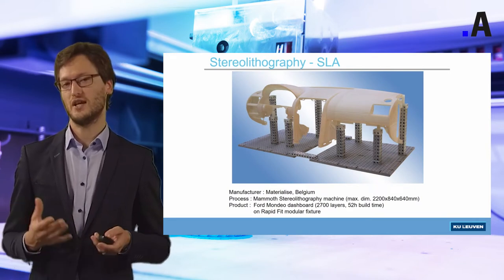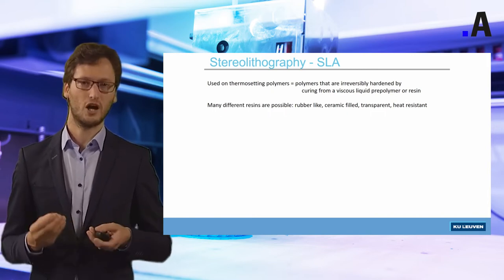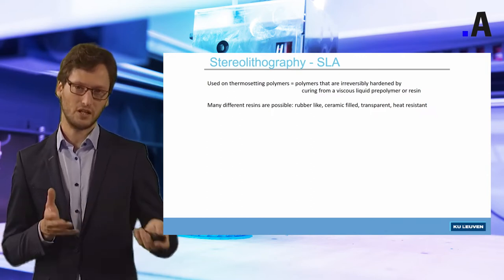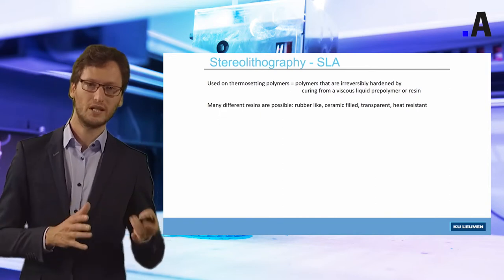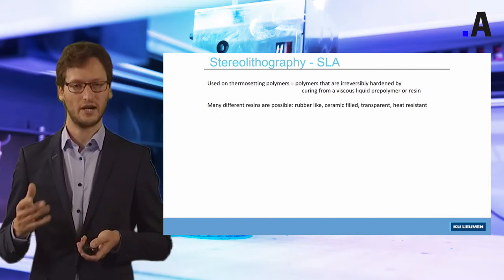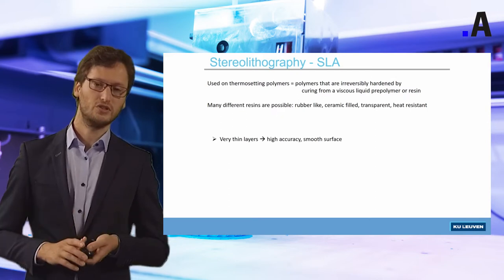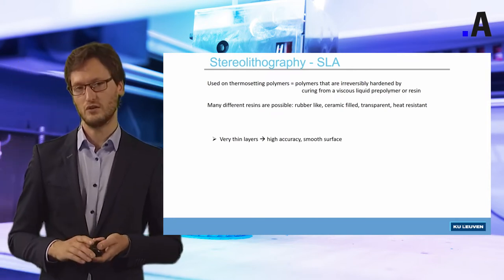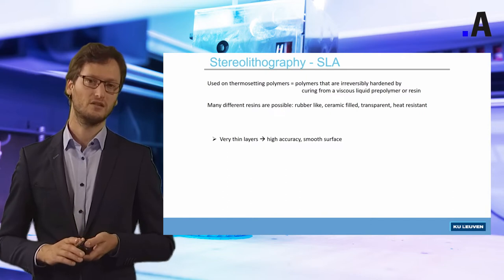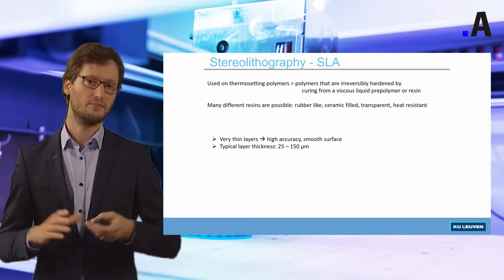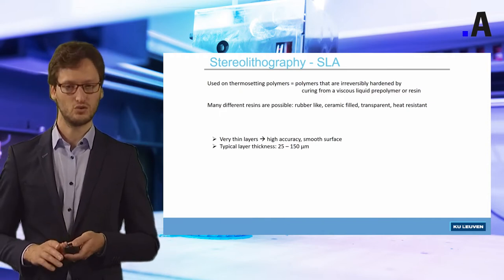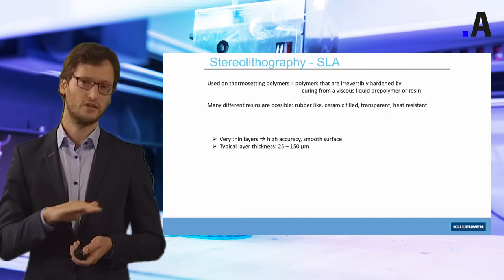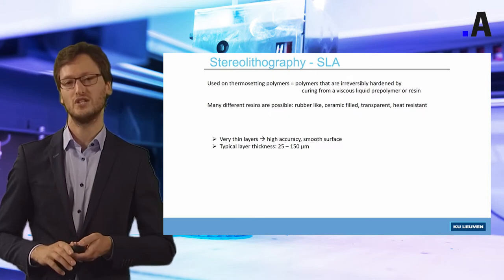Stereolithography is a technique that exists for many years, using polymers that can be hardened by ultraviolet laser interaction. Many different resins exist depending on the application — transparent resins, rubber-like resins, or ceramic-filled resins with higher stiffness. Some characteristics of this technology are that we can use very thin layers, meaning the surface quality of these parts is generally high and very smooth. A typical layer thickness is between 25 and 150 micrometers, which links directly to the high accuracy that can be reached.